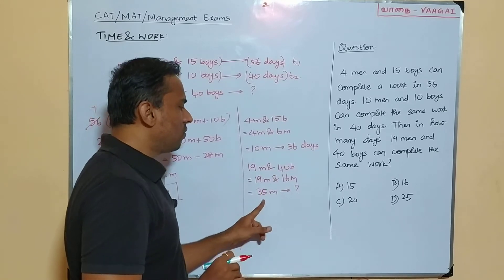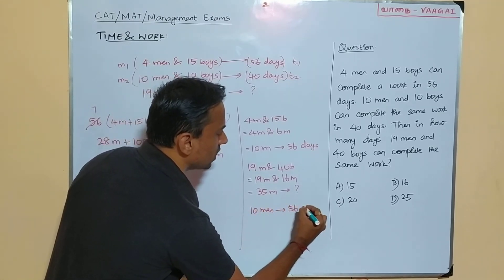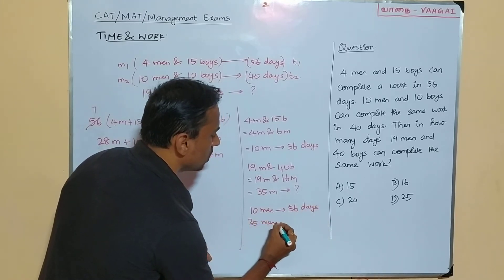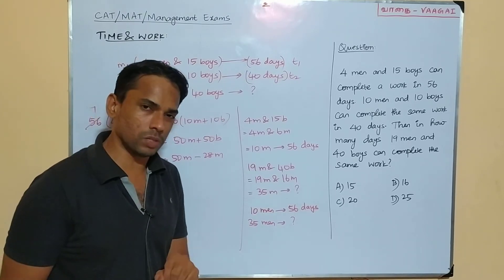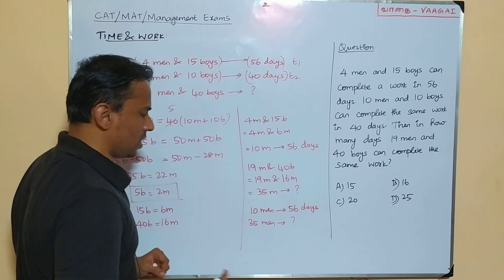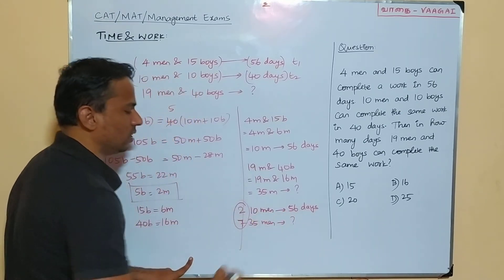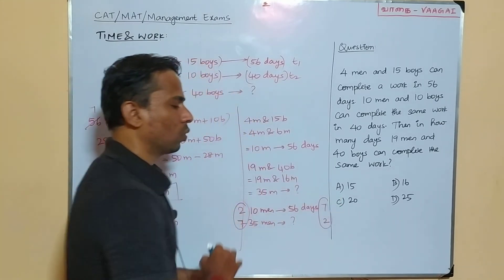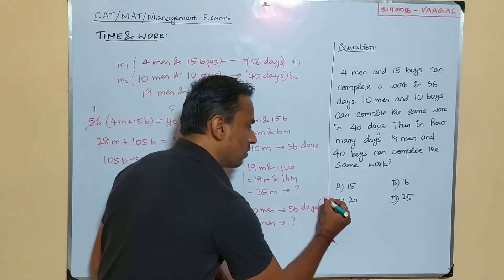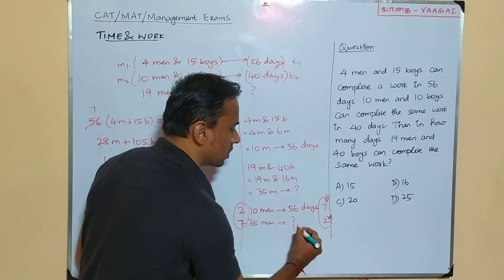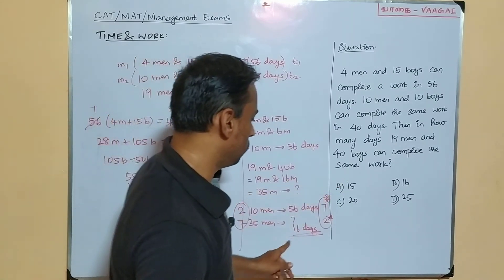10 men take 56 days; 35 men take how many days? Using the ratio concept: the ratio of men is 10:35, which simplifies to 2:7. Since more men means fewer days, the days ratio is inverse: 7:2. So if 7 parts = 56 days, then 1 part = 8 days, and 2 parts = 16 days. The answer is 16 days, which is option B.